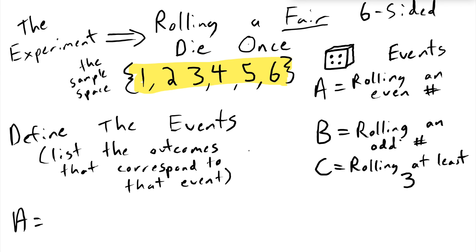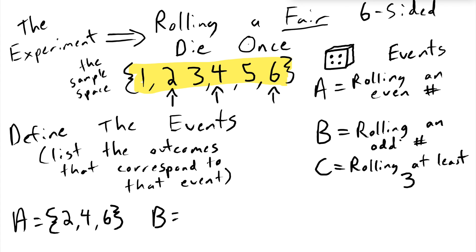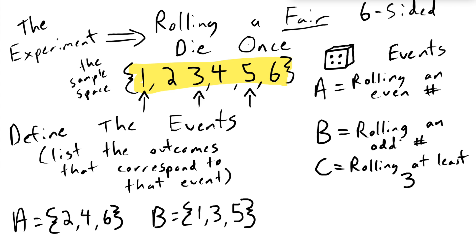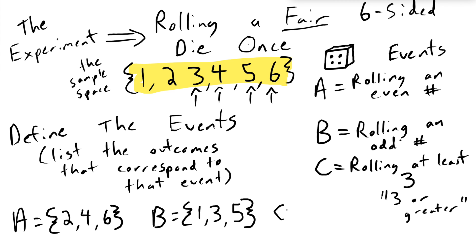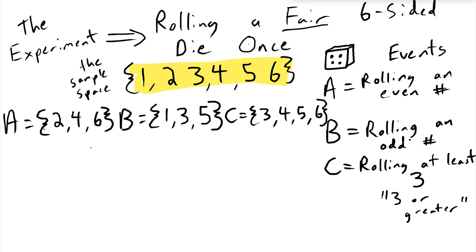Event A is rolling an even number. If I wanted to define it in terms of its outcomes, which numbers are even? Two, four, and six — so if any of these outcomes happen, A happened. B is any of the odd numbers: one, three, and five — also three possible ways. Event C is at least a three: three, four, five, or six. So here are these events defined.